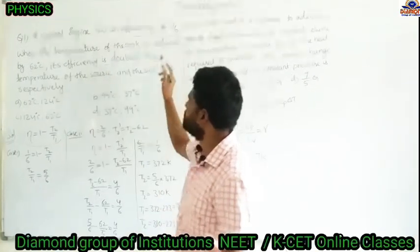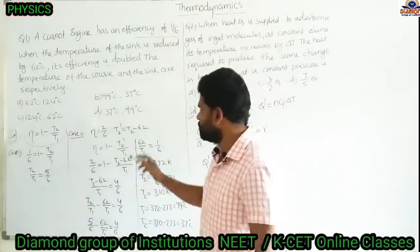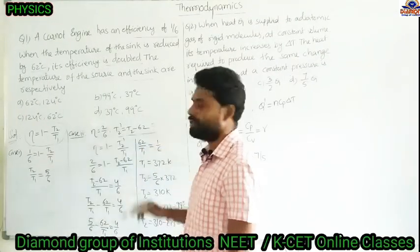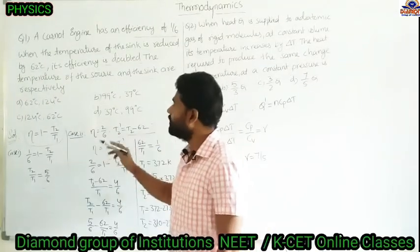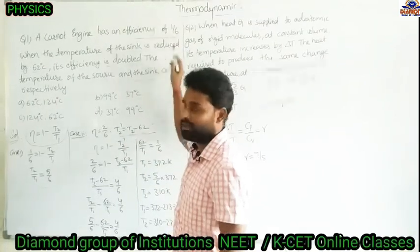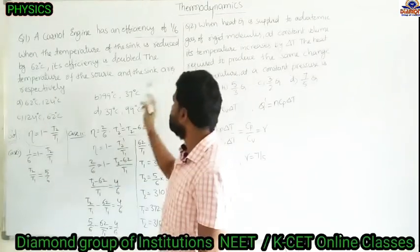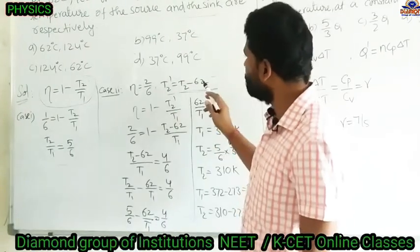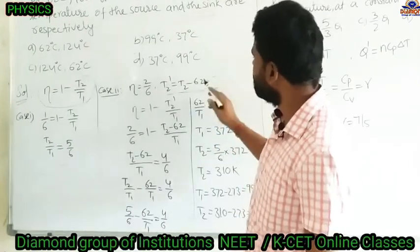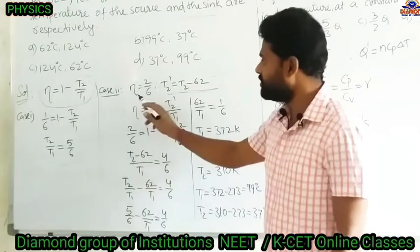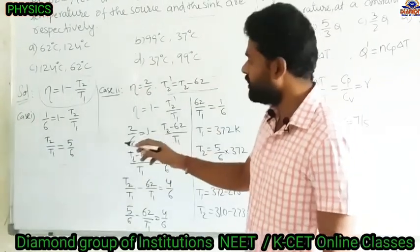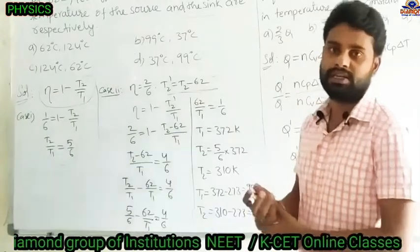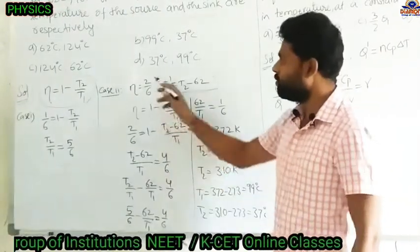For the next case, the sink temperature is reduced by 62 degrees centigrade and the efficiency becomes double. Initially efficiency is 1/6, so now it becomes 2 × (1/6) = 2/6.